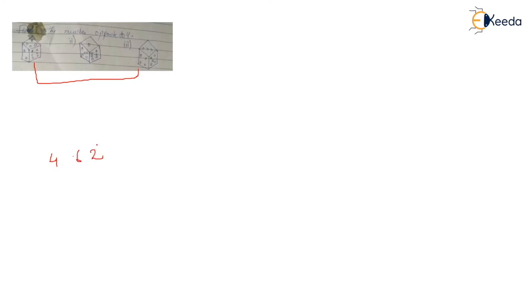Here is the next question: find the number opposite to four. There are four dices in front of you — four, two, six; one, five, six; three, four, and five. You have to take the dice which have a common similarity. These two dice are similar and four is common in both of them. So I rotate four clockwise: four, six, two — and here also clockwise: four, two, five. So the answer is one. No need to solve the entire question — just see the common things.